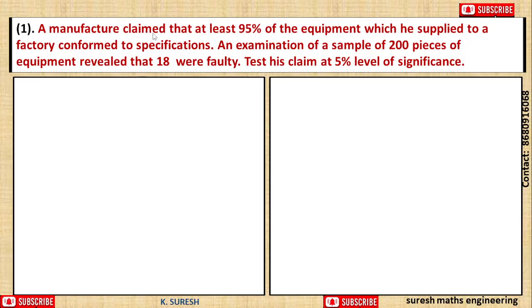A manufacturer claimed that at least 95% of the equipment which he supplied to a factory conformed to specifications. An examination of a sample of 200 pieces of equipment revealed that 18 were faulty. Test his claim at 5% level of significance.